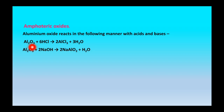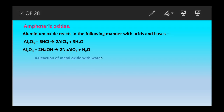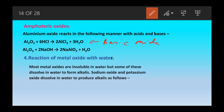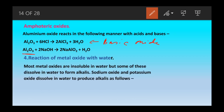In that reaction Al₂O₃ acts as a basic oxide. But when Al₂O₃ reacts with NaOH it also produces salt and water, so here it acts as an acidic oxide. Since Al₂O₃ shows both acidic and basic behaviour, it is called an amphoteric oxide.